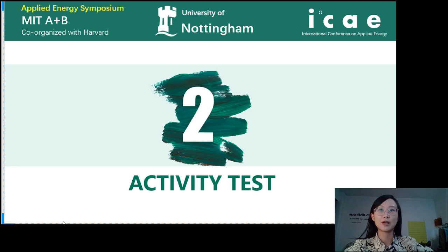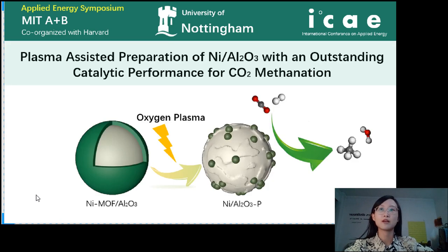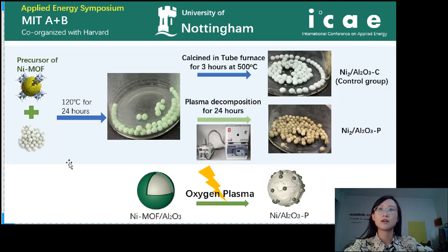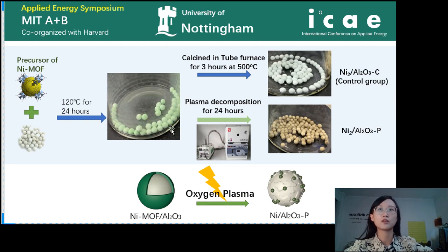Let's see the preparation and activity test. Here is the graphical abstract. We use oxygen plasma to decompose the nickel MOF, which is coated on the surface of the alumina, and the prepared catalysts are used for carbon dioxide methanation. Here shows the preparation method. First, we grow the nickel MOF on the surface of the alumina. After the nickel MOF forms a thin film on the surface of the alumina, it was divided into two groups.